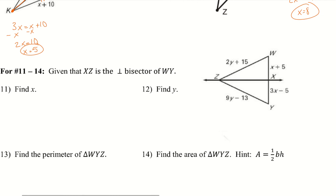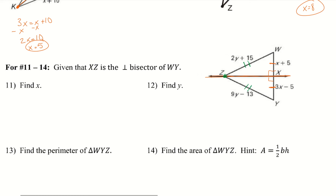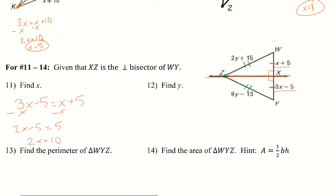For our last example: given that XZ is the perpendicular bisector, I know these parts are congruent and these are 90-degree angles. Since Z lies on this perpendicular bisector, I know ZW and ZY are congruent. To find X, I set X plus 5 equal to 3X minus 5. Subtracting X gives 2X minus 5 equals 5, so 2X equals 10, divide by 2, and X equals 5.